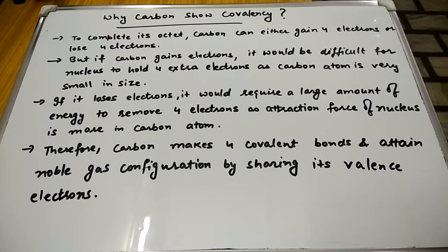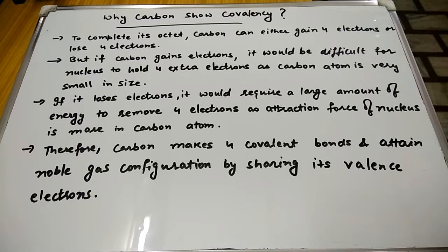In the earlier video we have seen how carbon exists in nature and what are its basic properties. In this video we are going to discuss why only carbon shows covalency and why it doesn't form any ionic bond.